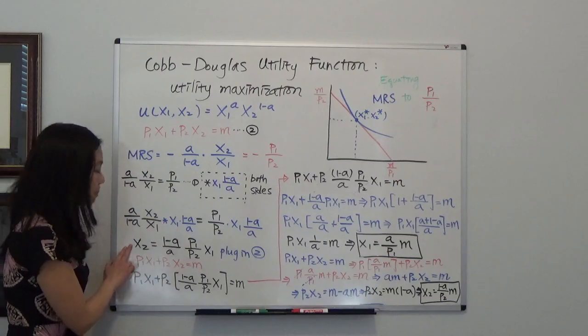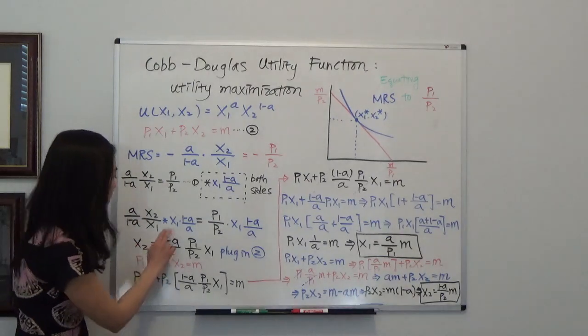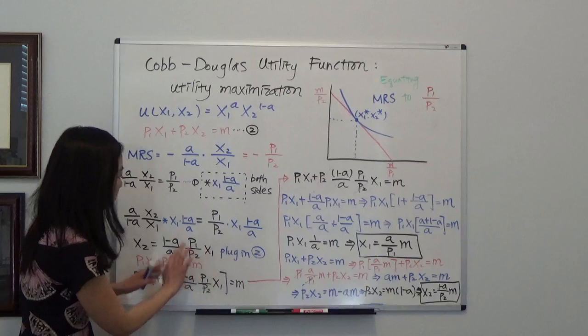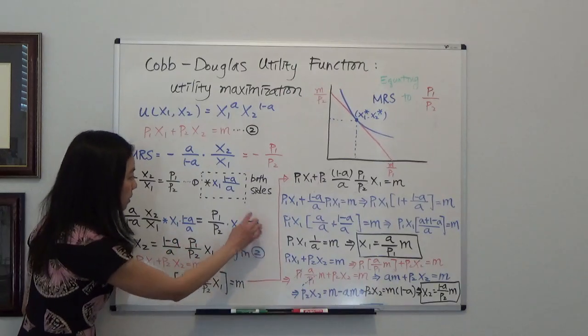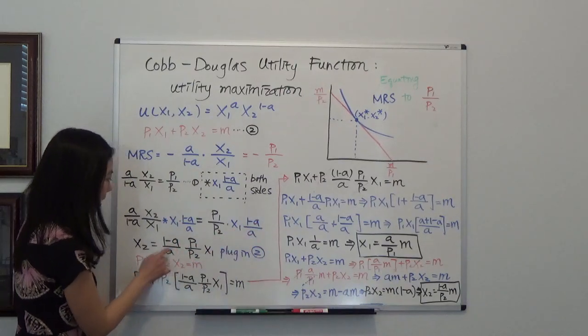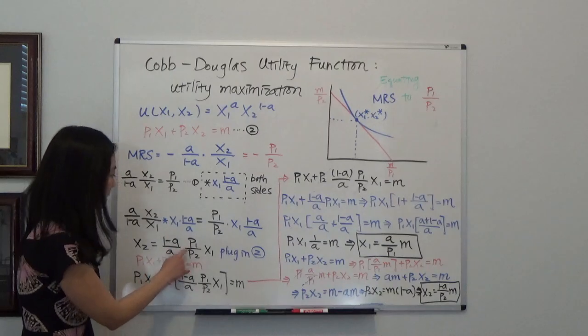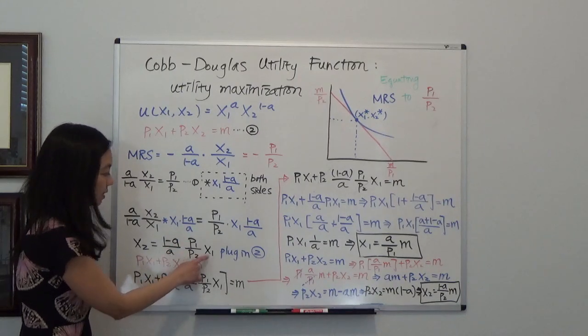So on the left-hand side, I'm left with x2. On the right-hand side, that's equal to, I'm just going to rearrange a term, putting 1 minus a divided by a first. That one times p1 over p2 times x1.